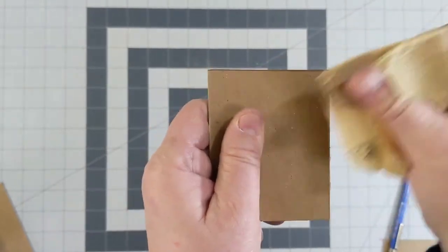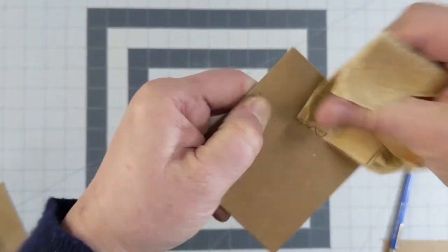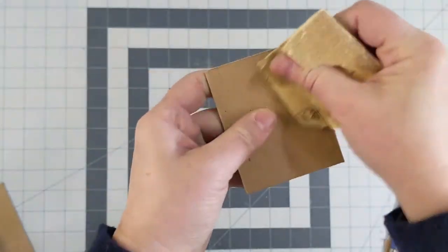You will almost certainly get some ridges and rough edges when you cut with a box cutter, so get some sandpaper and smooth them down.